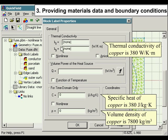Thermal conductivity of copper is 380 W/K·m. Specific heat of copper is 380 J/kg·K. Volume density of copper is 7800 kg/m³.